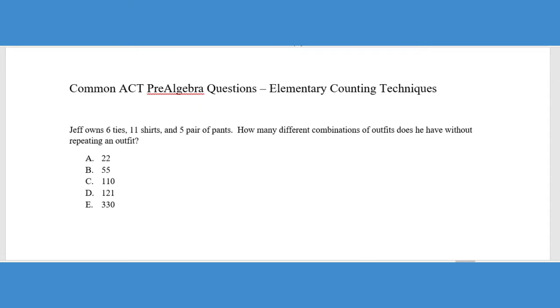So the generic problem that you tend to see on the ACT math is the old subway sandwich problem. How many sandwiches can you make if you have X amount of toppings, X amount of pieces of bread, types of bread, meats, things of that nature. So the other one is like our first sample problem here. How many wardrobes can a person wear? So we can see here, it says, Jeff owns six ties, 11 shirts, and five pairs of pants. How many different combinations of outfits does he have without repeating an outfit?